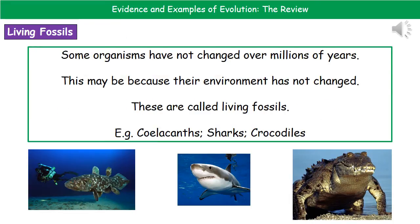Another source of evidence for evolution comes from living fossils. These are organisms that have not changed over millions of years, and this could be down to the fact that their environment hasn't changed. Three examples are the coelacanth on the left, the shark in the middle, and crocodiles on the right — organisms that just haven't changed over millions of years because their environment hasn't really changed and they've got no need to evolve.